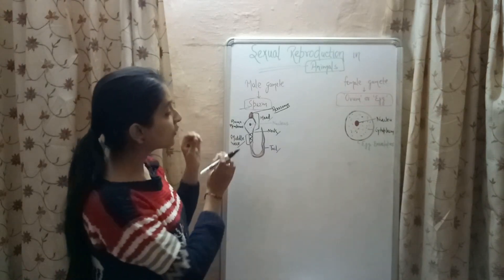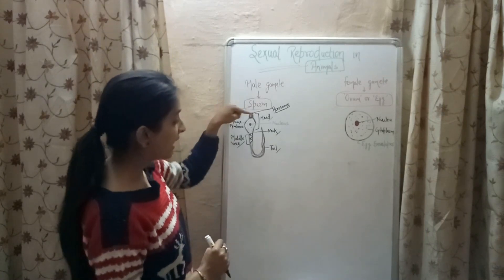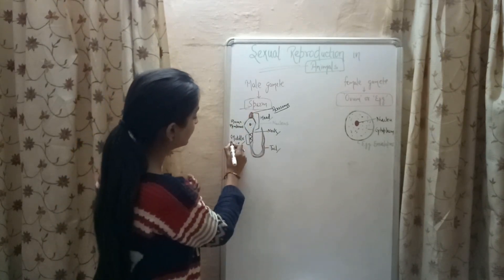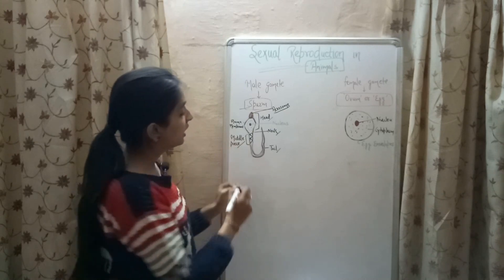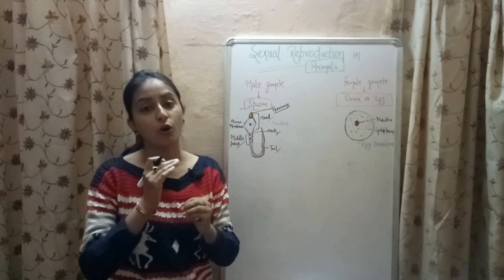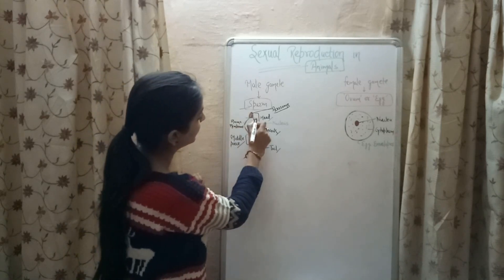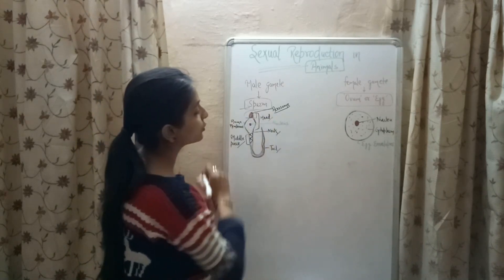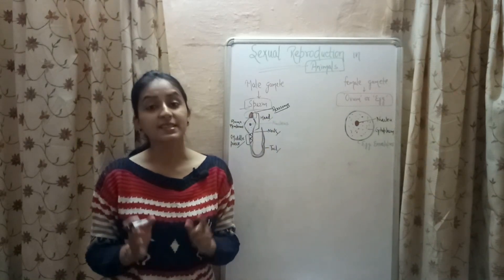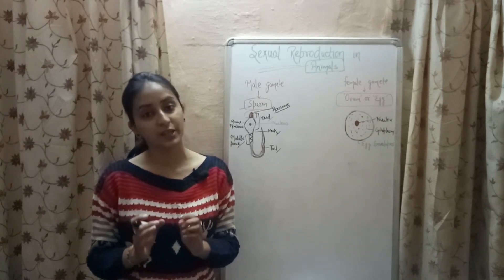The body of the sperm is divided into four parts: head, neck, middle piece and tail. The head is the topmost portion of the sperm. The upper part of the head is known as acrosome, which contains a large number of enzymes that helps in the process of fertilization.